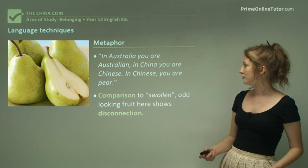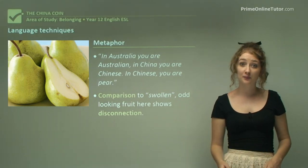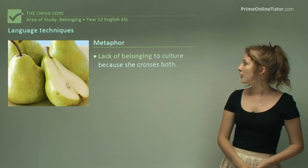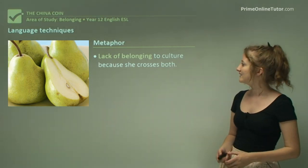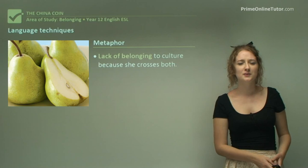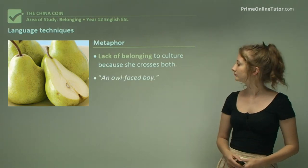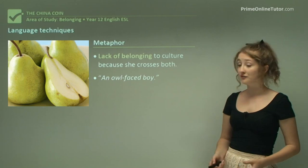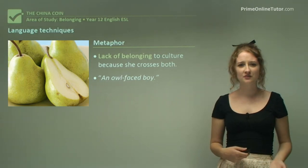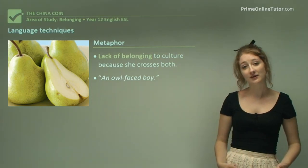The comparison to the swollen, odd-looking fruit shows her sense of disconnection from the Chinese culture, from her family in China, and from the culture as a whole. Metaphor is also a really good way for the author to express lack of belonging to culture — because she crosses both, she almost belongs to two cultures half-heartedly rather than belonging to one completely. Another metaphor is the 'owl-faced boy,' which is an indication of the way Bailey uses metaphor to increase the descriptiveness of his work, making it interesting and poetic for the reader.